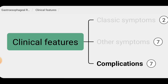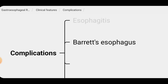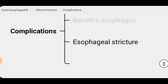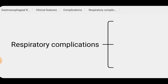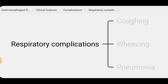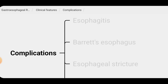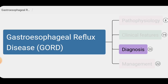The complications of GORD are esophagitis, Barrett's esophagus, esophageal stricture, and respiratory complications such as coughing, wheezing, and pneumonia. In a previous video we discussed Barrett's esophagus, so you can go back to that video and refresh your knowledge.